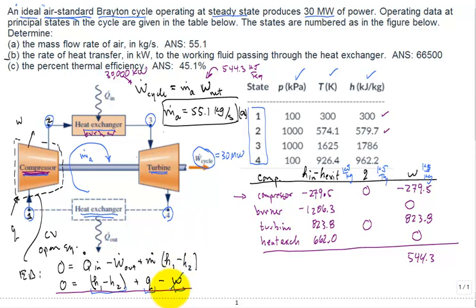The W is zero for the burner. And so, the Q is the minus of the H in minus H out for that burner. So, it's basically just changing the sign right here to 1206.3. And then, likewise, for the heat exchanger, it's rejecting negative 662.0.